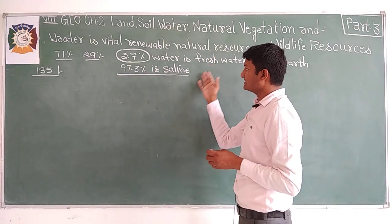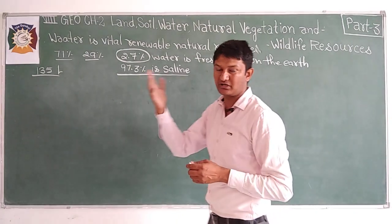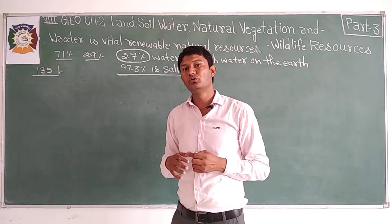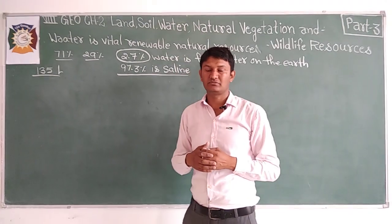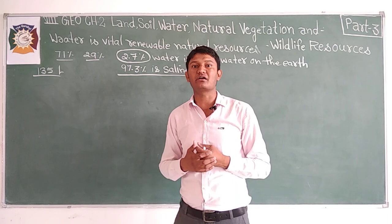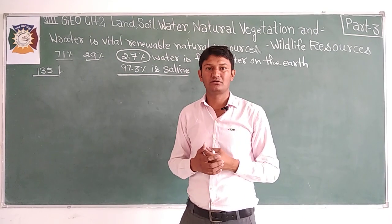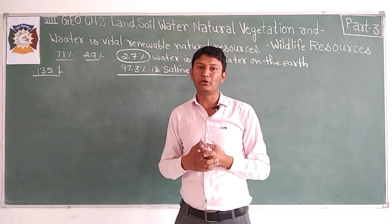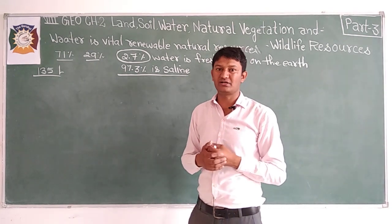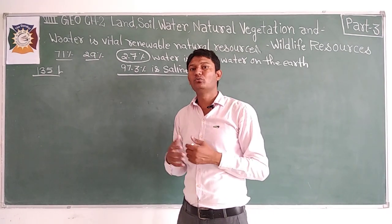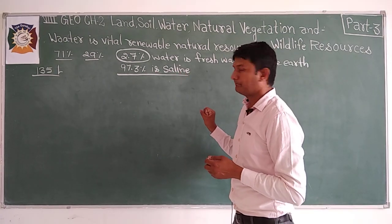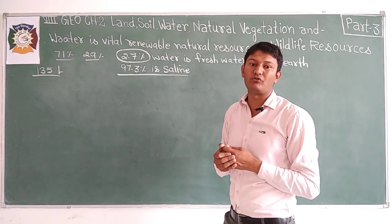Fresh water is used for agriculture and industries, and these activities pollute the water. Many rivers in India like the Ganga and Yamuna are among the most polluted rivers in India today. Now we will discuss the availability of water.